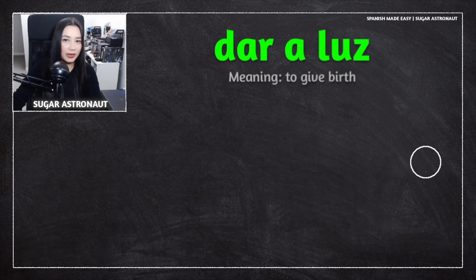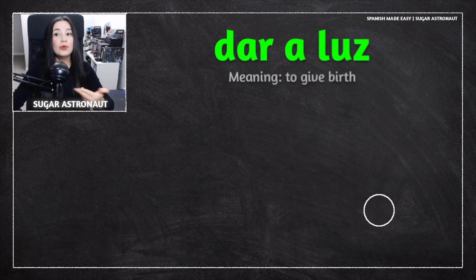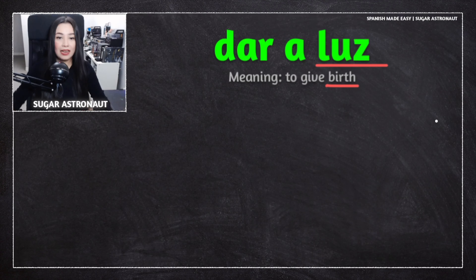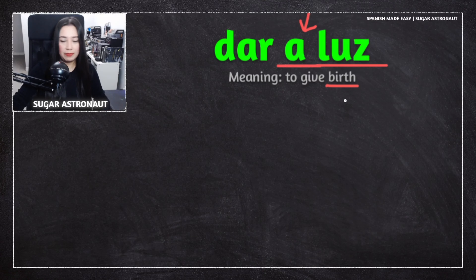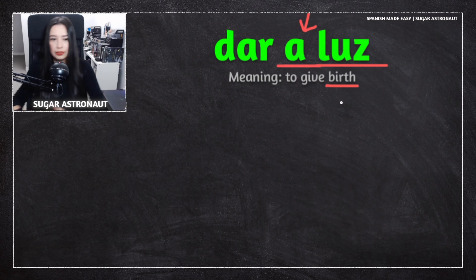We're not talking about light. We're saying 'to give,' so that's the meaning of dar. But luz, in this situation, doesn't mean light — it means birth. Remember the 'a': dar a luz. You need to include this; it's important. Because if you say dar luz, that's like you're talking about light, and it doesn't make much sense. It makes sense to say dar a luz — to give birth.